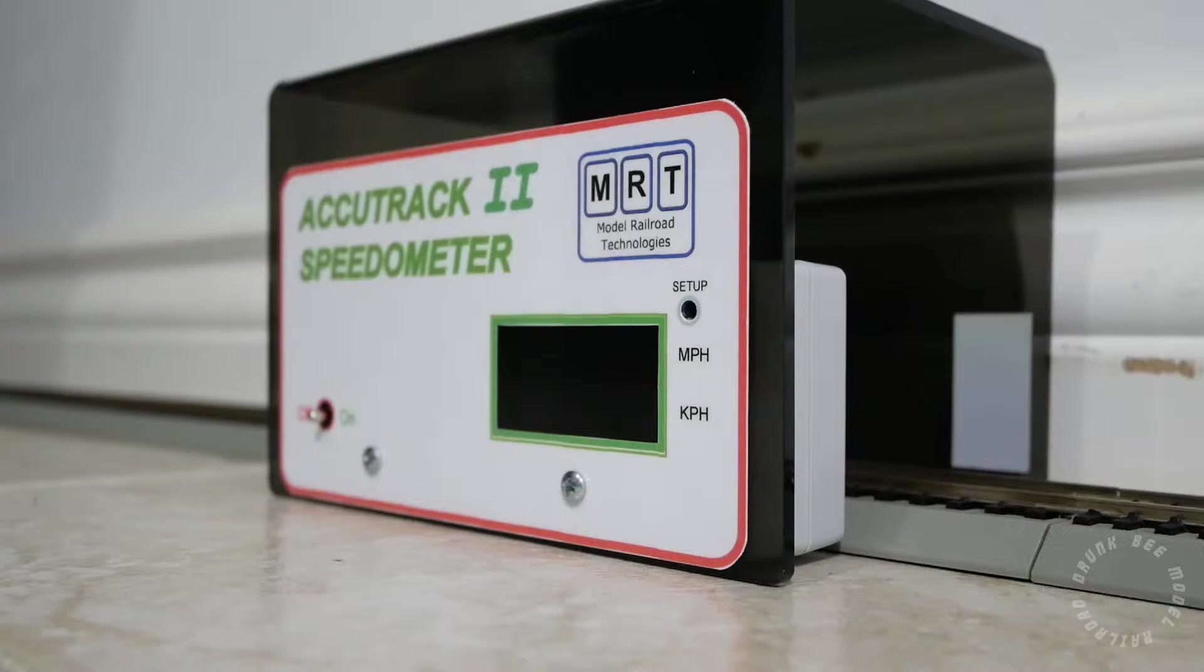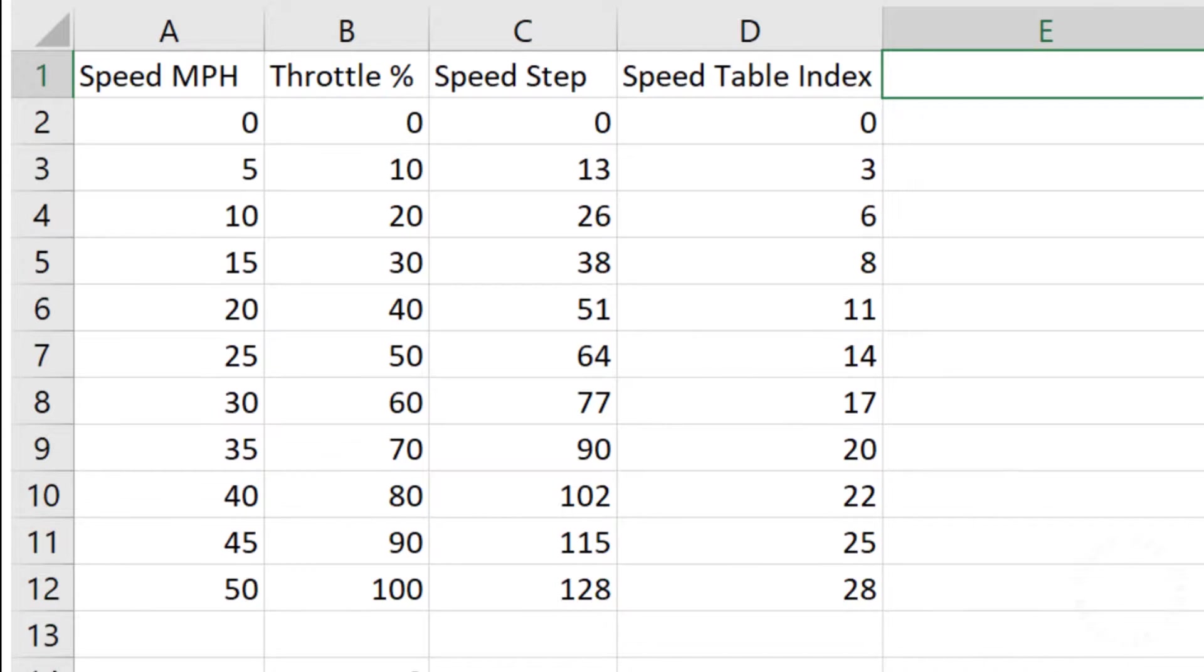Since our DCC system and DCC decoder does not talk in terms of scale speed, I am going to draw up a chart to help you visualize better. The JMRI throttle which I am using with my Digitrax system goes from 0 to 100, with 0 being stopped and 100 being the maximum speed. The decoders in the locomotive use speed steps, which usually goes from 0 to 128. And lastly, the speed table inside each decoder have 28 indices. It is a good idea to make a conversion chart between scale speed, throttle position, speed steps, and speed table indices so that you can quickly refer to it when doing speed matching. I will make this chart available for download. Note that all the values are rounded to the nearest whole number on the chart.